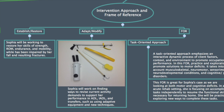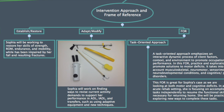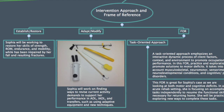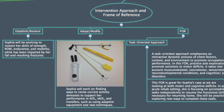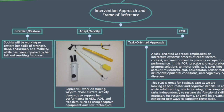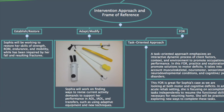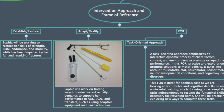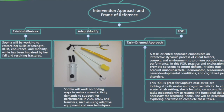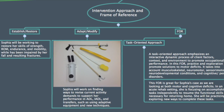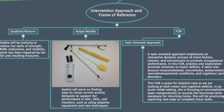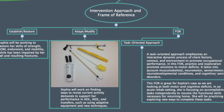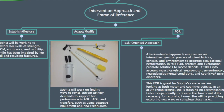Intervention approaches that will be used with Sophia include establish/restore, as she will be working to restore her skills of strength, range of motion, and mobility, and adapt/modify, as she will work on finding ways to revise her current activity demands to support her occupational performance using adaptive equipment and new techniques. The frame of reference chosen for Sophia is a task-oriented approach.